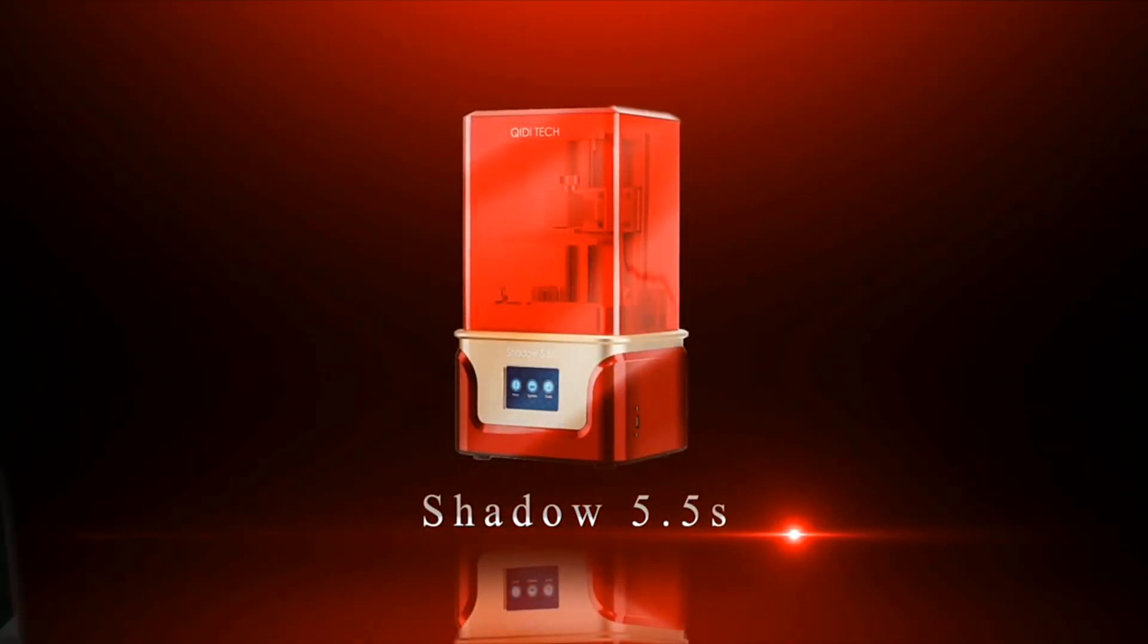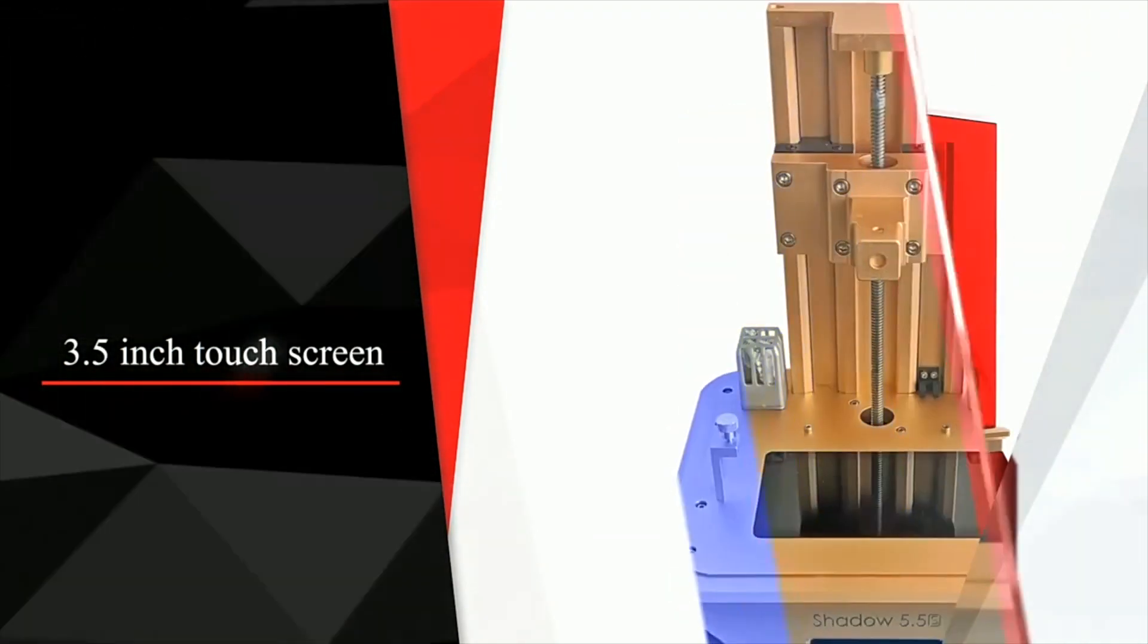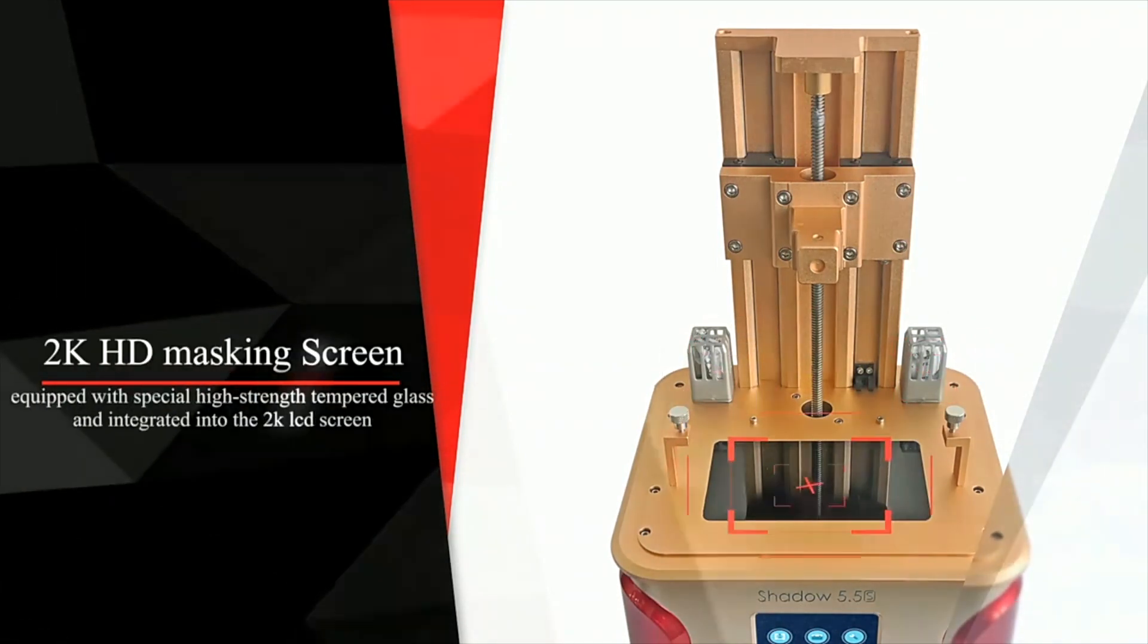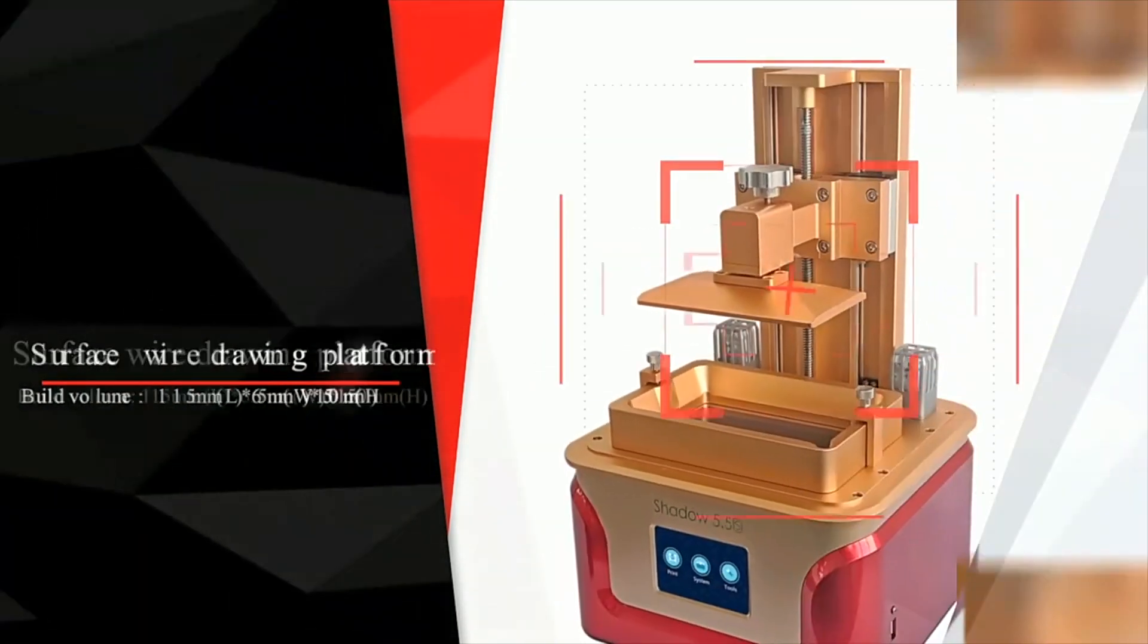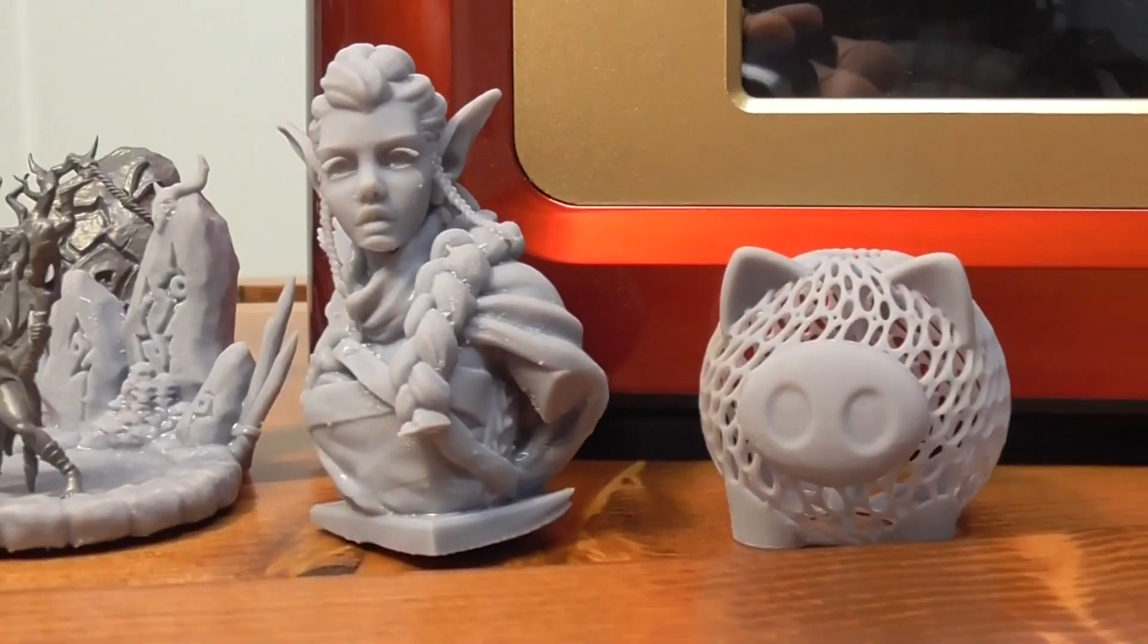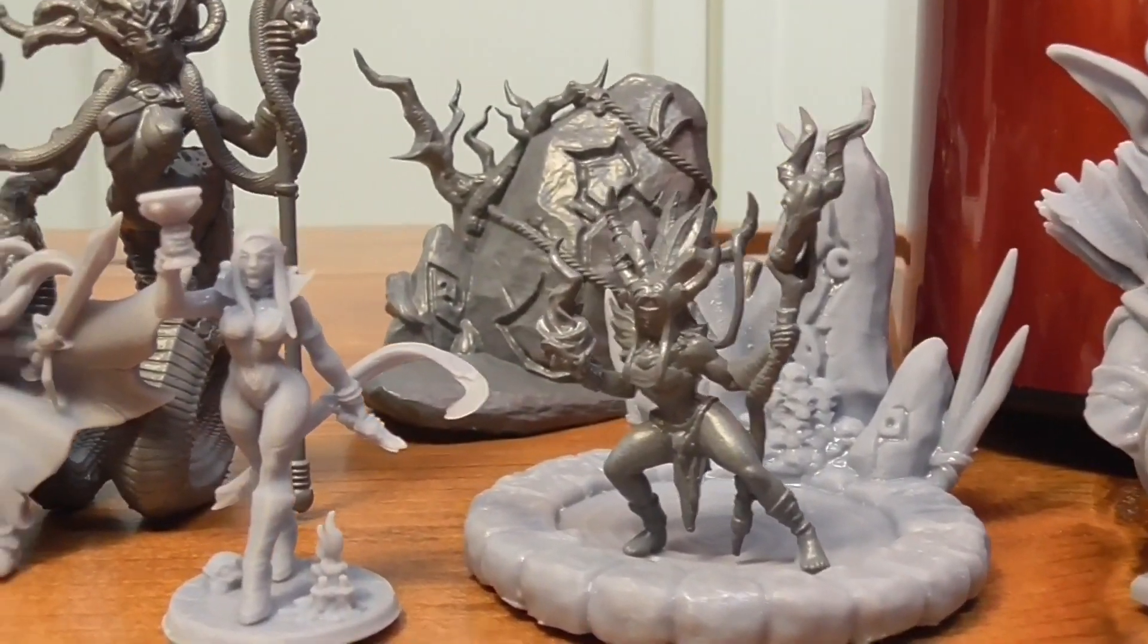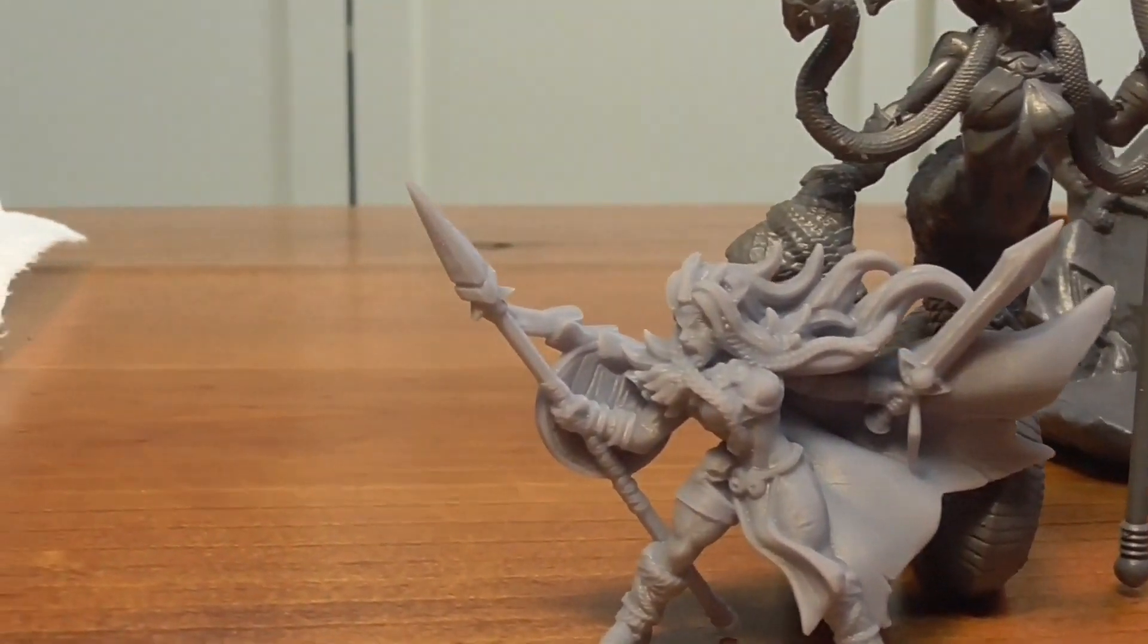For number 7, the Kiddy Tech Shadow 5.5S. This is an impressive 3D printer for the price given. It has a build volume of 115 by 65 by 150 millimeters, has an LCD display resolution of 2K and sells for $179. The prints from this printer look quite impressive as you can see.